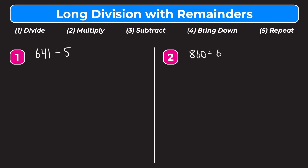The steps for long division with remainders are the same as the steps for long division without remainders, and those are: divide, multiply, subtract, bring down, and repeat. So for number one, we have 641 divided by 5.